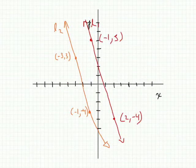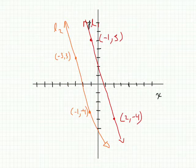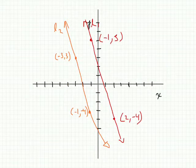In this question, check to see if these lines are parallel. To check, we have to find the slope of each line, then see if the slopes are equal. Because parallel lines have slopes equal to each other, and perpendicular lines have slopes that are negative reciprocals of each other.